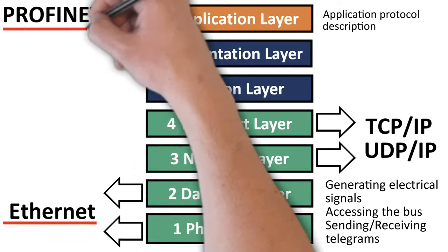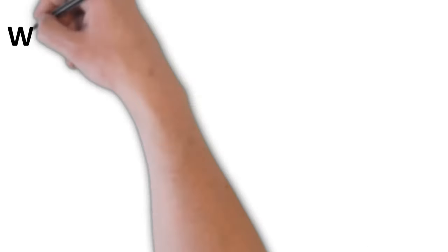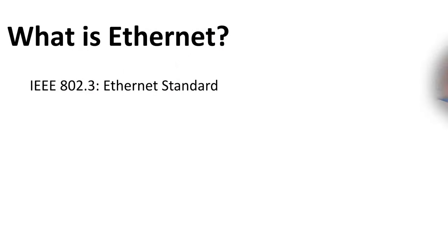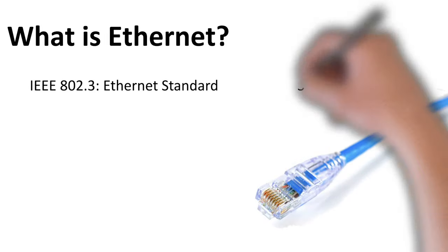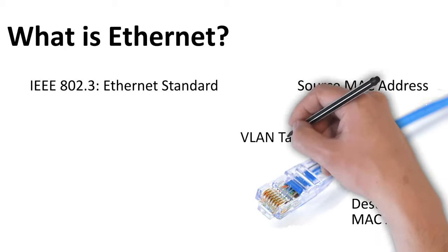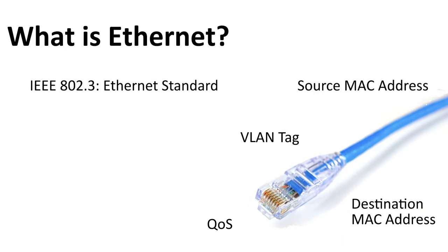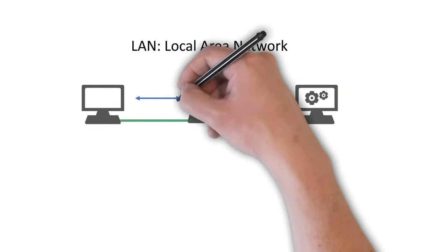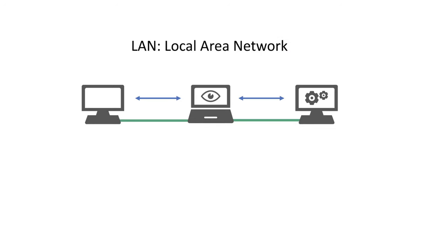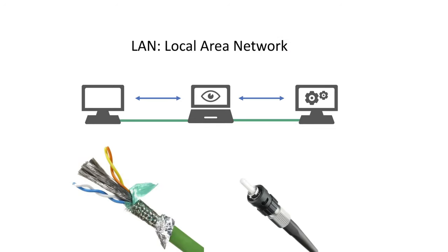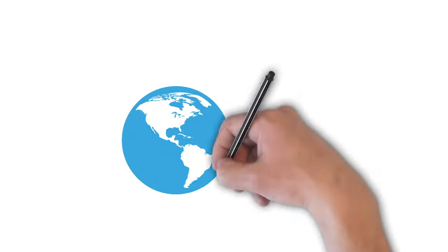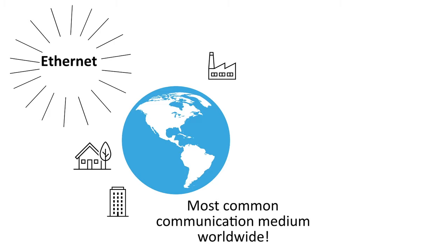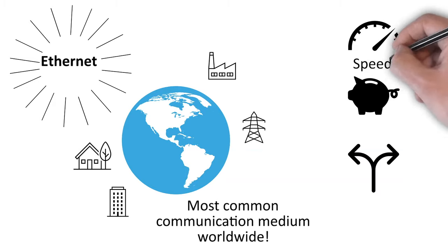Let's explain Ethernet and Profinet separately and then put those concepts together. What is Ethernet? IEEE 802.3 specifies the standards that make up Ethernet. Ethernet frames include information such as the MAC addresses of the sender and receiver, virtual LAN tagging, and quality of service. Ethernet is used to connect nodes in a local area network. The physical link between nodes can be, for example, a twisted pair cable or a fiber optic cable. Nowadays Ethernet is the most common communication medium worldwide, used in homes, enterprises, factories, and in general infrastructure due to its speed, affordability, and versatility.